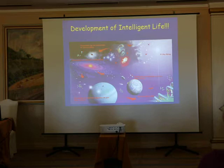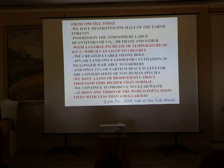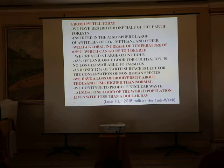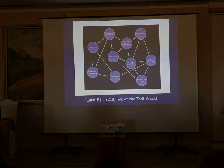The development of intelligent life — what is intelligent humanity doing? A list of damages we have made since 1950, about 17 years, shows the problems of modern times: pollution, global warming, insane consumption of energy, deforestation, the immense richness of multinationals, the extreme poverty of so many people, immigration, and so on. These cannot be considered in isolation because all these problems are interconnected, as everything is in the universe.